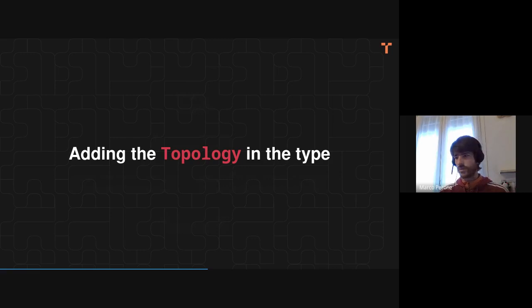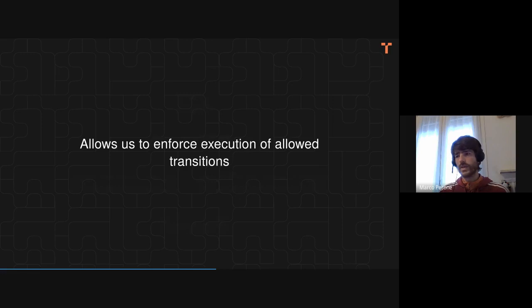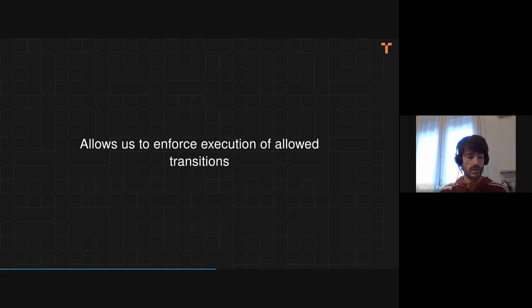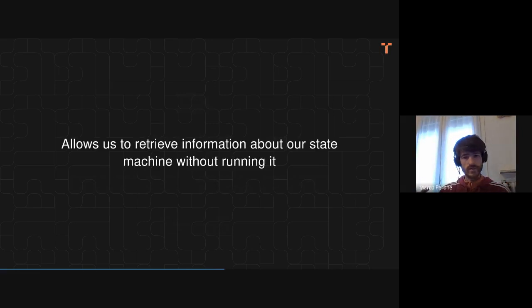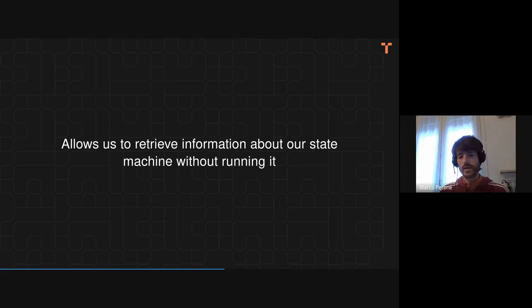If we add the topology at the type level, we basically allow the user to enforce the execution only of allowed transitions. So we give the user a way to say 'this transition is not allowed and should never be performed.' The consequence is that if you try to implement a transition which is not allowed, you get a compilation error — which is very cool. Also, since we have the information stored at the type level, we don't need to run our machine to extract that information. Using some type-level machinery, we can retrieve information about our state machine without running it — basically print a drawing of the topology.